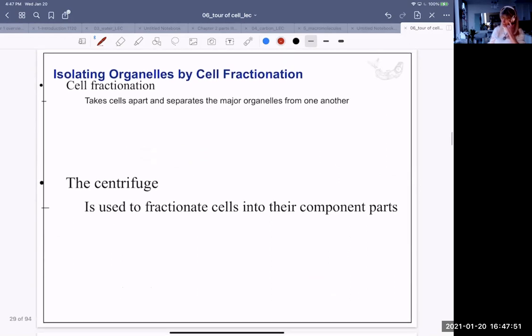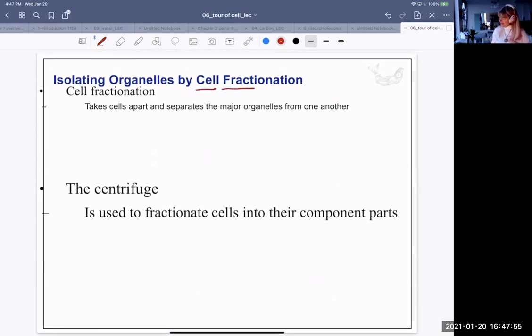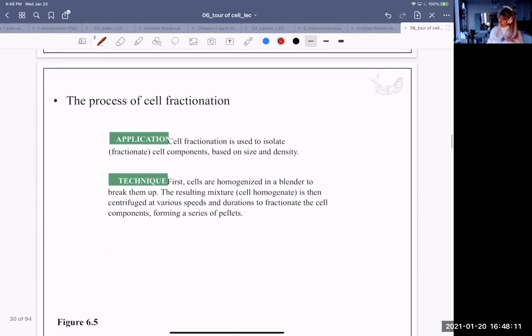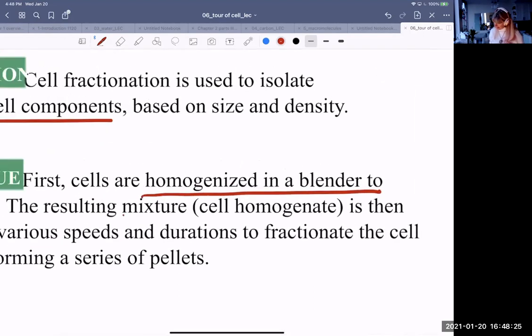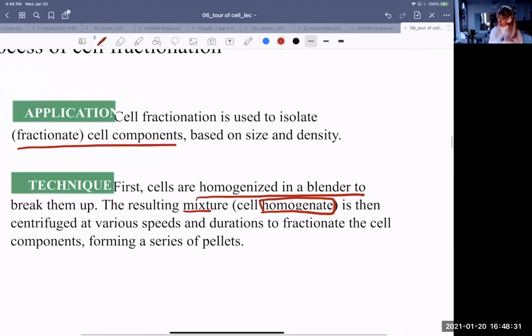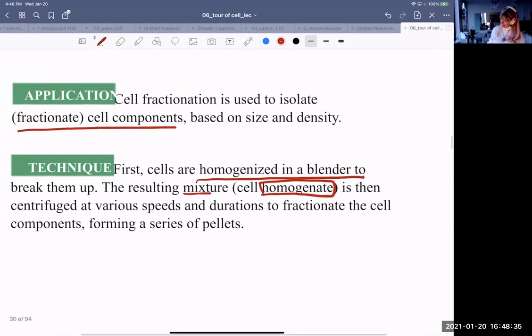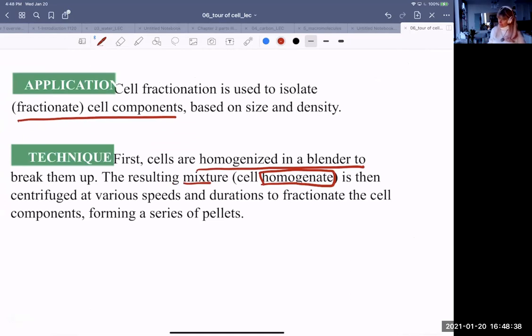How can we separate parts of the cell? Well, there's this method known as cell fractionation. It takes them apart, separates organelles from one another. That's one way of doing it. Another way is using a centrifuge. So I'll show you what that looks like. Fractionation. It isolates cell components based on size and density. First of all, the cells are homogenized in a blender to break them up. The resulting mixture then is called a homogenate. And then that is centrifuged at various speeds and durations. And that fractionates or separates the cell components forming pellets.